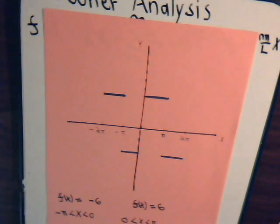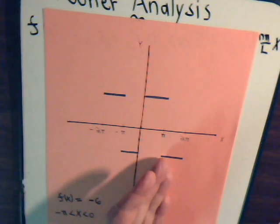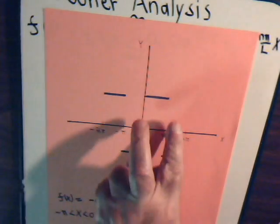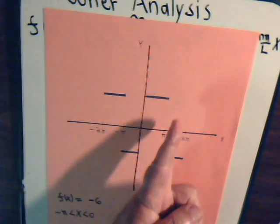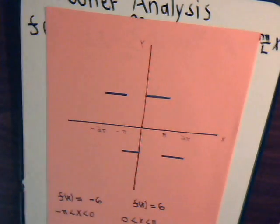Also notice that this is an odd function. If we rotate this about the x-axis, this side, and then multiply by a negative 1, we get this. For example, rotate this about the x-axis, multiply by a negative 1, and we get that line segment.